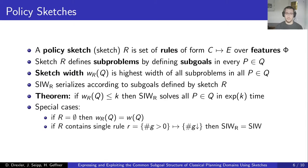The SIW_R algorithm serializes according to the sub-goals defined by sketch R. For example, SIW_R starts an IW search from the initial state until it finds a state defined as a sub-goal by the policy sketch, then runs another IW search from that state, and so on until it finds the overall goal. The theorem from previous work tells us that if the sketch width is at most k, then SIW_R solves all problems p in Q in time exponential in k. Two special cases: if the sketch is empty, the sketch width corresponds to the highest width of any problem in Q; and if the sketch contains a single rule that decreases the number of unsatisfied goal atoms, then SIW_R mimics the standard SIW algorithm.